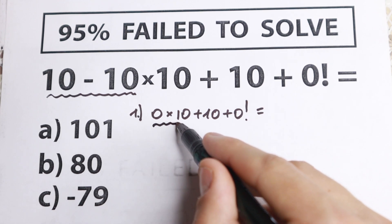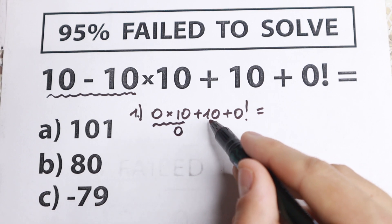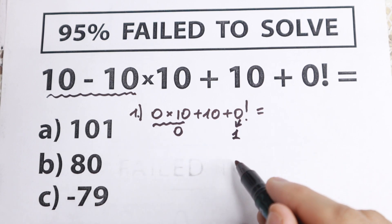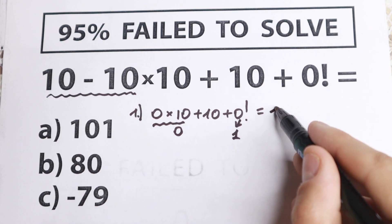If we multiply 0 times 10 we have 0, and 10 plus 0 factorial. We know that 0 factorial equals 1. So 10 plus 1 equals 11.